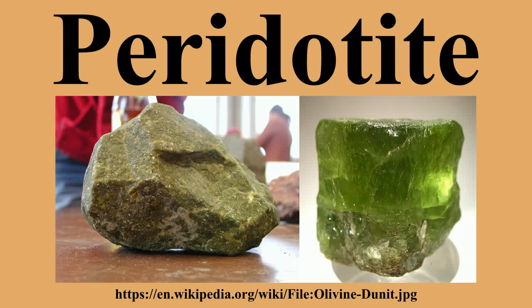Ophiolites also include pillow basalt, diabase dike complexes, and red chert. Other masses of peridotite have been emplaced into mountain belts as solid masses but do not appear to be related to ophiolites; these have been called orogenic peridotite massifs and alpine peridotites. Peridotites also occur as fragments carried up by magmas from the mantle.